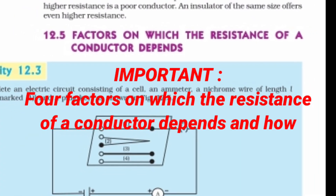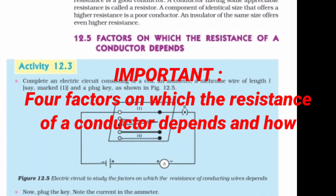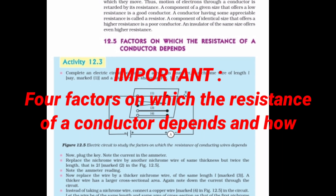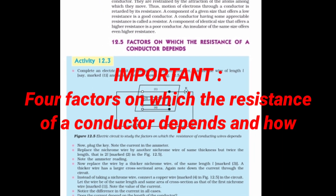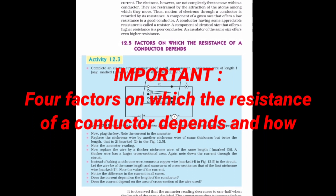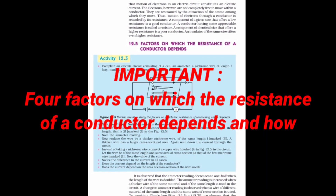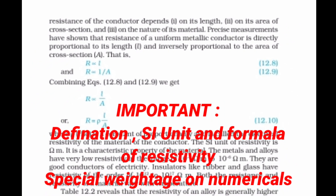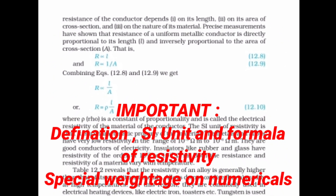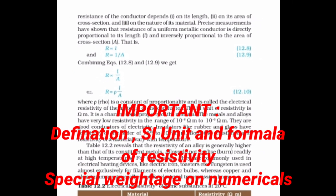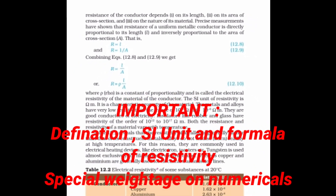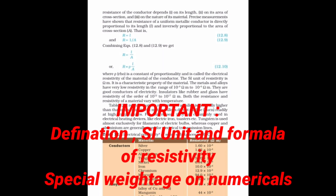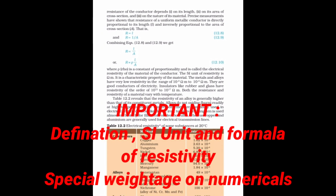Under the next topic — factors on which the resistance of a conductor depends — you must be thorough on the four factors and how they are dependent. Highlight the definition, SI unit, and formula of resistivity. Also give special weightage to the numericals of resistivity from this particular page.